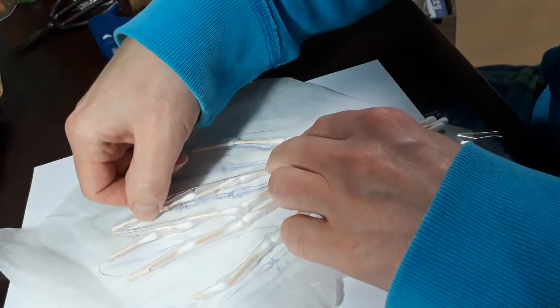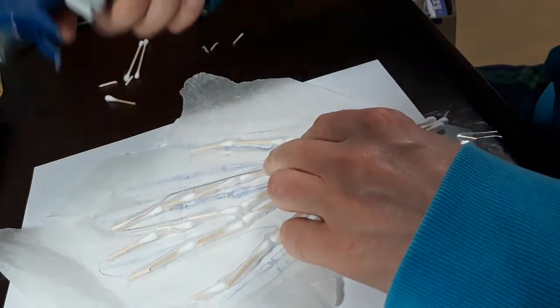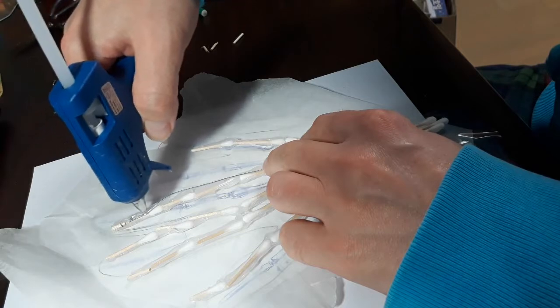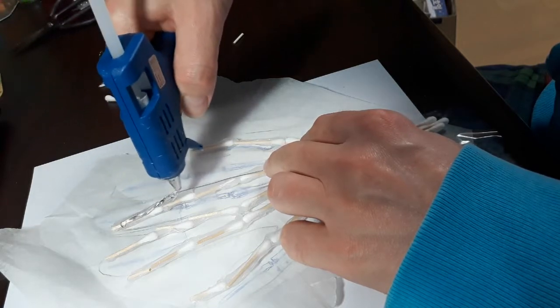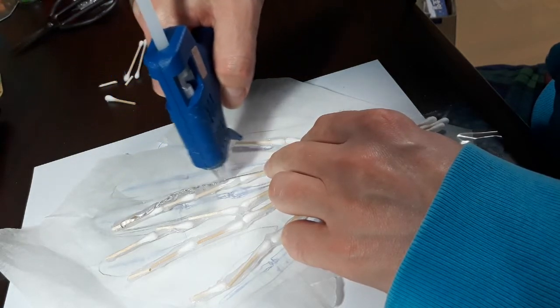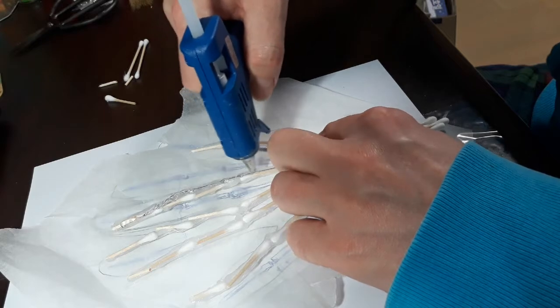each and every finger should have a bit of hot glue on them, very easily, you can create a bend any way you want to do it, shape them, and then once you put your paint on here, you'll have your mummy's hand.